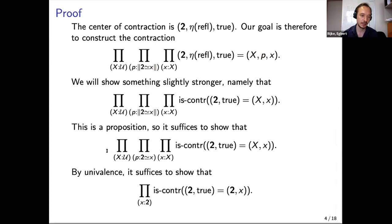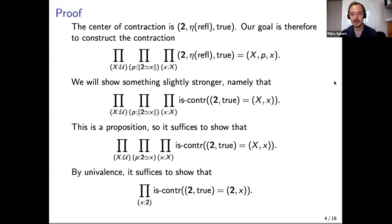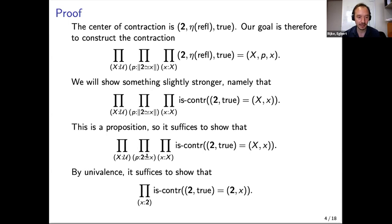It suffices to show that for every X that is actually equivalent to Booleans, for every point, there is a unique equality from the pair (Bool, true) to (X, x). In this situation we can apply univalence: the type of all Xs that are actually equivalent to Bool is contractible, so we can just pretend X is Bool. It suffices to show that for every Boolean, the type of such equalities is contractible.